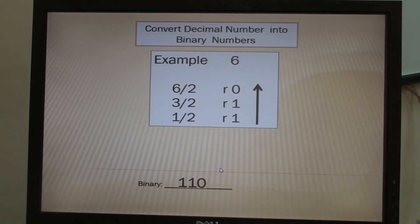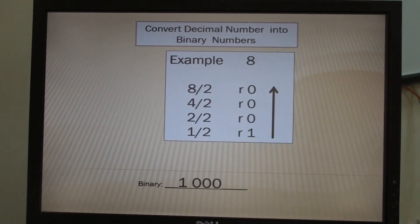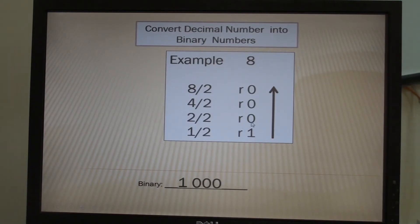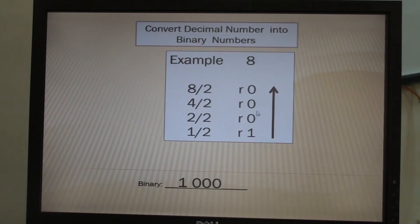Let us convert decimal number 8 in binary. Divide by 2: 8 divided by 2 is 4, remainder 0. 4 divided by 2 is 2, remainder 0. 2 divided by 2 is 1, remainder 0. 1 divided by 2 is 0.5, but instead rewrite as remainder 1. Write the answer from below to the top, from left to right: 1, 0, 0, 0. The equivalent of decimal 8 in binary is 1000.